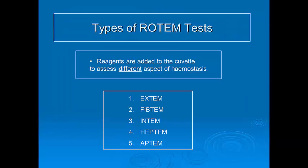Five different ROTEM tests are available. These tests have different reagents added in order to allow us to assess different components of haemostasis. In this guide, we will focus on the two most commonly used tests: EXTEM and FIBTEM.